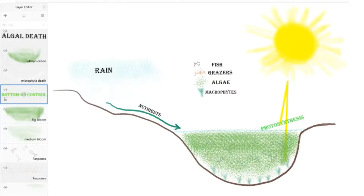And that's what we call a bottom-up control. The system is being controlled by what happens in the bottom of the pyramid, what happens with algae and macrophytes.